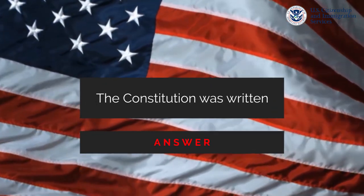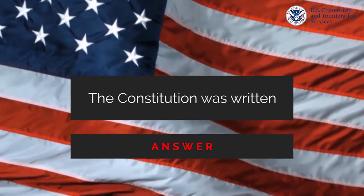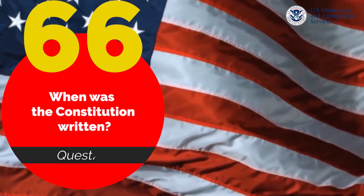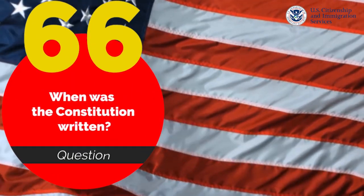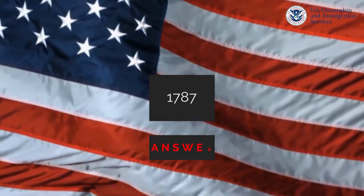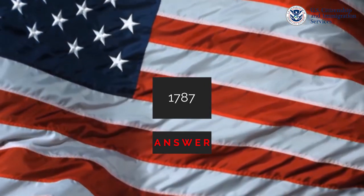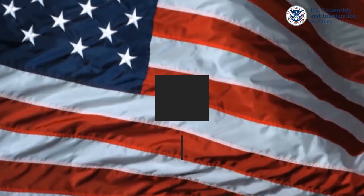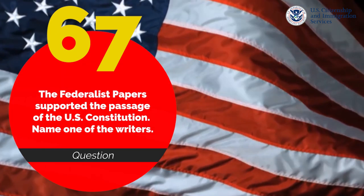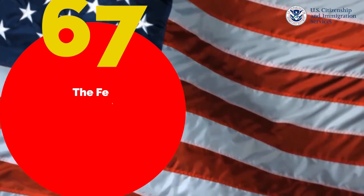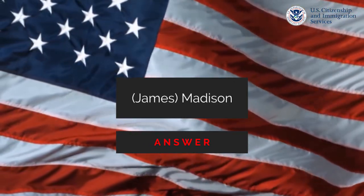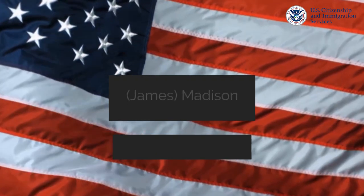What happened at the Constitutional Convention? The Constitution was written. When was the Constitution written? 1787. The Federalist Papers supported the passage of the U.S. Constitution — name one of the writers. James Madison.